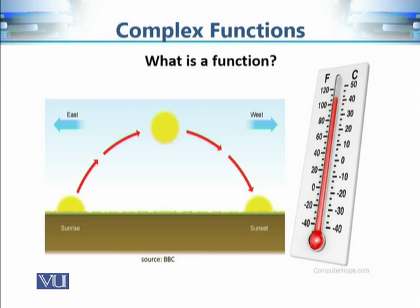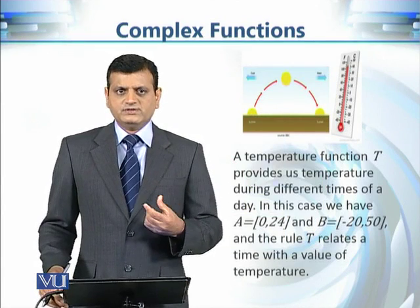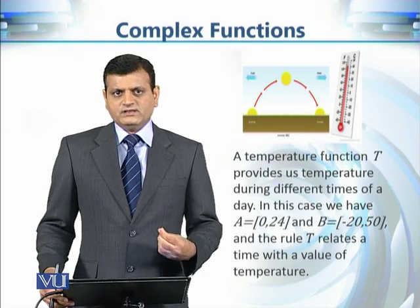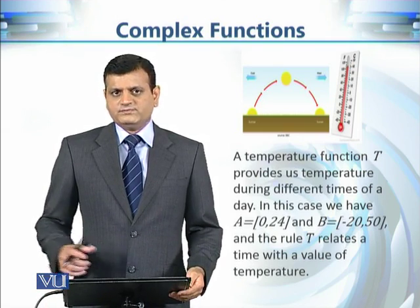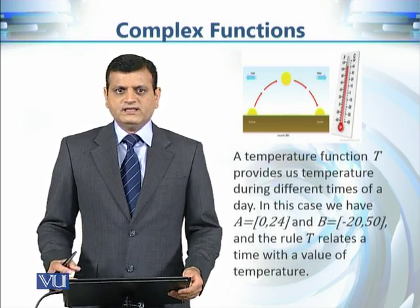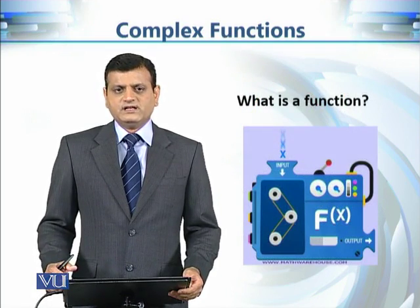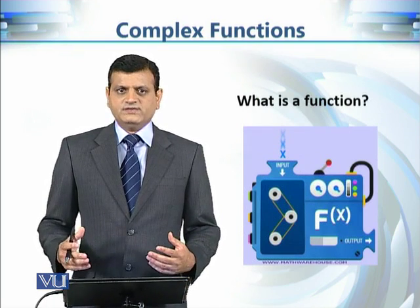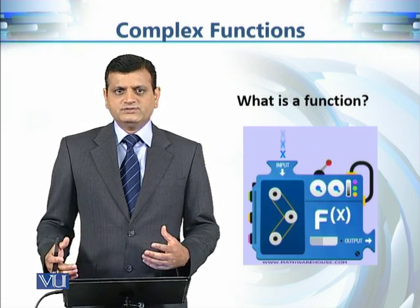The output is always one unique value. If this function is useful, we should get a temperature value for each and every time. So the temperature function associates each and every value of time in a 24-hour period with a unique temperature value between, say, −20°C and 50°C. It is like a machine that takes one quantity as input and gives another as output.